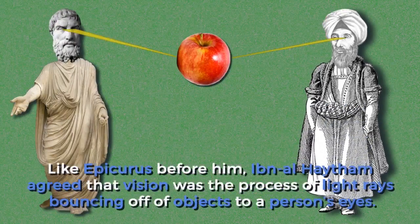Like Epicurus before him, Ibn al-Haytham agreed that vision was the process of light rays bouncing off of objects to a person's eyes.